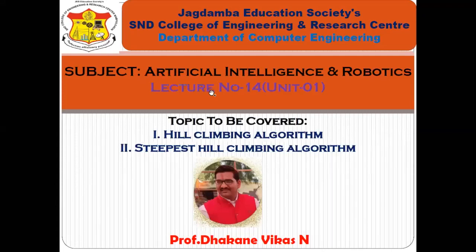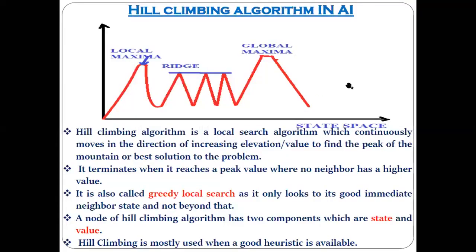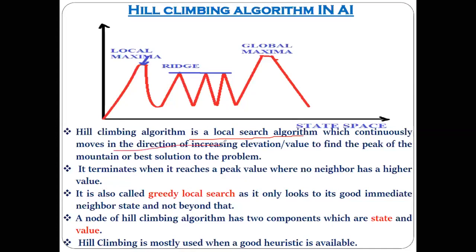The hill climbing algorithm is divided into two types, which we will see. First, let's understand what exactly the hill climbing algorithm is in the context of artificial intelligence, and then we will look at its types. This algorithm is generally referred to as a local search kind of algorithm. Using this algorithm, the AI agent tries to continuously move in the direction of increasing elevation — trying to move upward to find the peak of the mountain, meaning it tries to find the best solution to a particular problem.